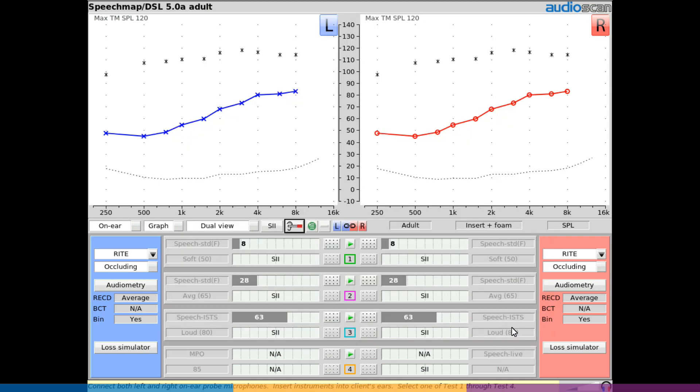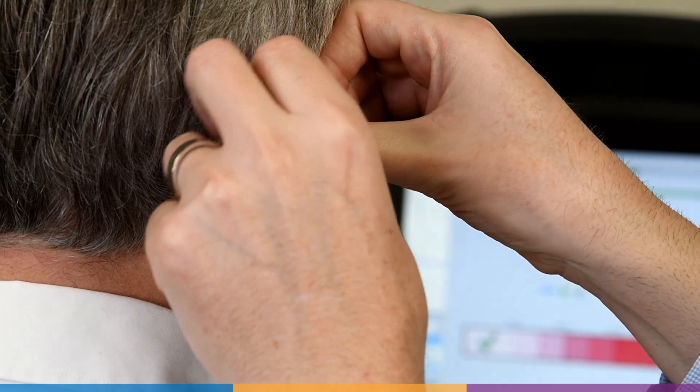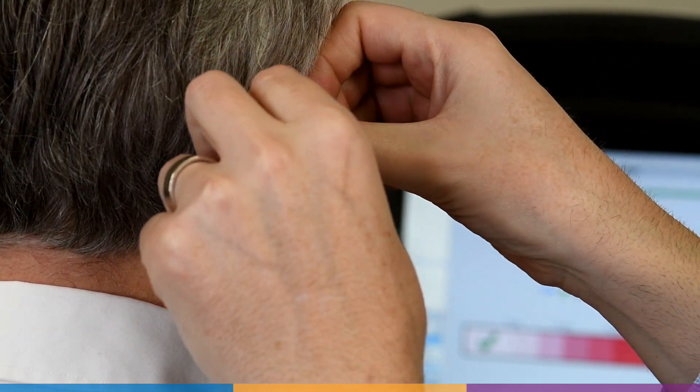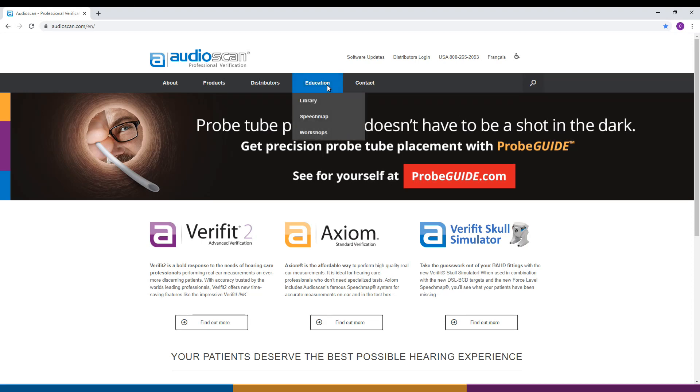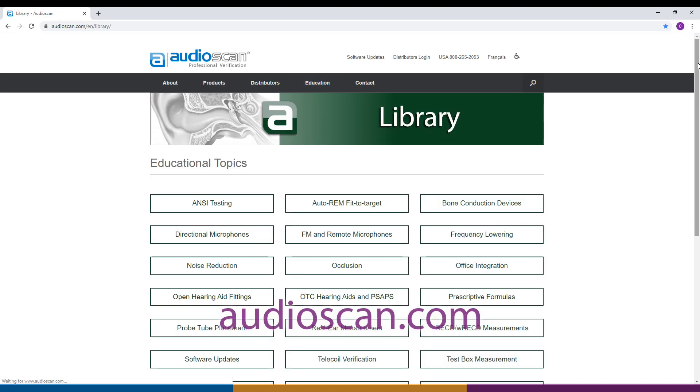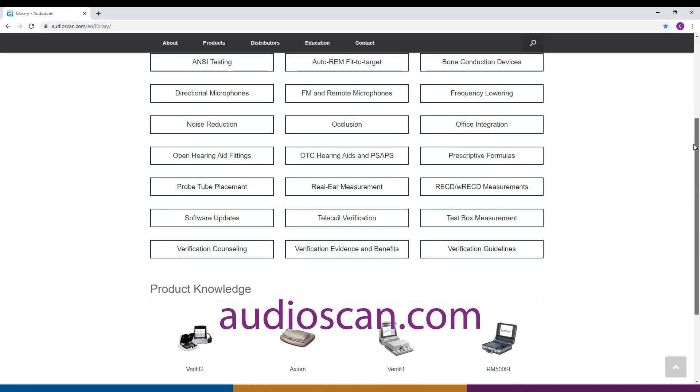Click the Close button to exit the ProbeGuide window. You are now ready to insert the hearing instruments and proceed with your desired real ear measurement testing. For more information on this and other features, please visit our website at audioscan.com.